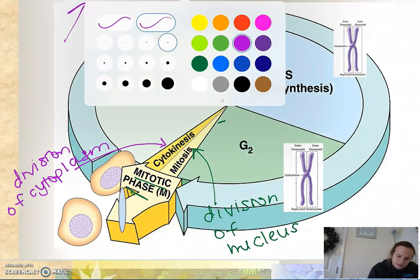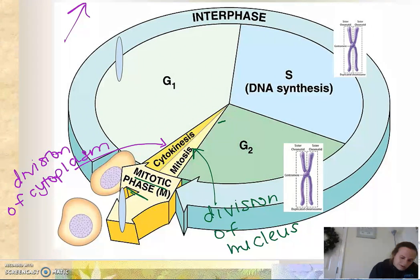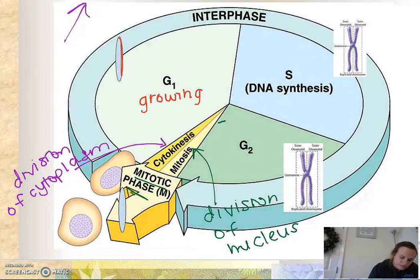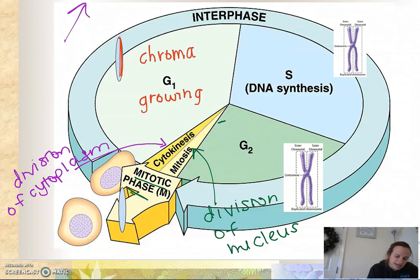This section of the interphase cycle involves our chromatin. So in gap one, our DNA is packaged as chromatin.